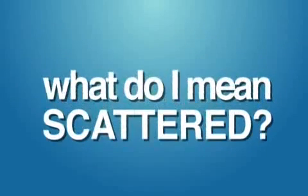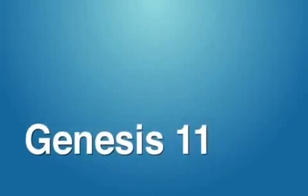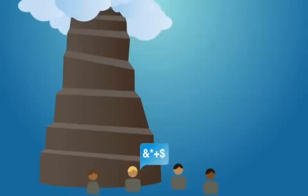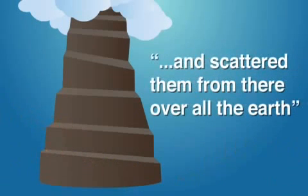Oh, wait a second. What do I mean scattered? Well, jump over to Genesis 11, and let's talk about an event known as the Tower of Babel. Basically, because of the sinful actions of the descendants of Noah, the Lord confused their language and scattered them from there over all the earth.